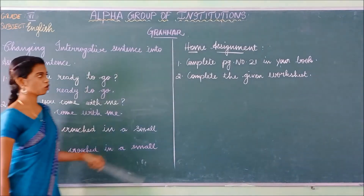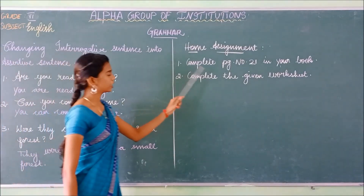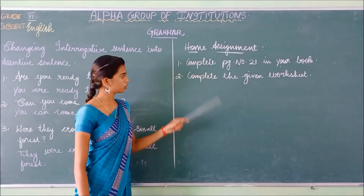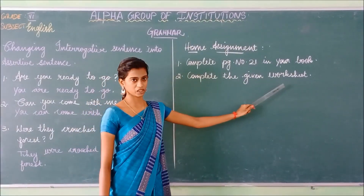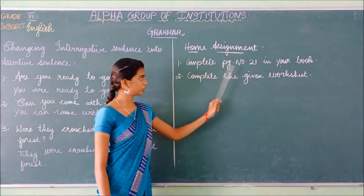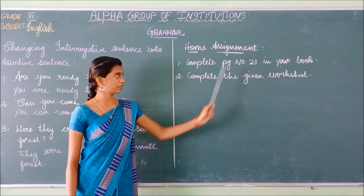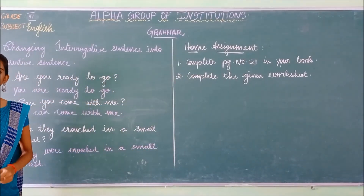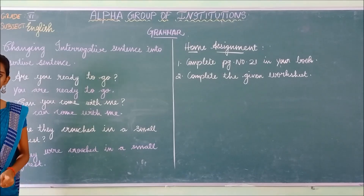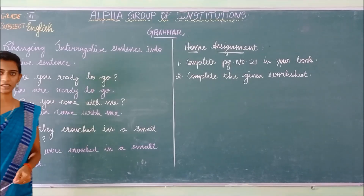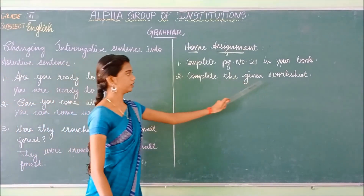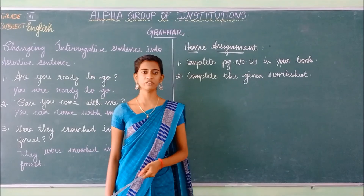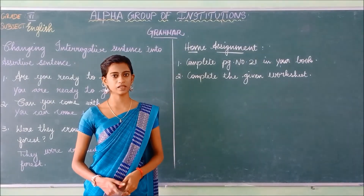This is for your home assignment. Complete page number 21 in your book. In page number 21 there are sentences given in interrogative type — you have to change them into assertive. Complete the given worksheet. We will meet in the next class. Thank you, students.